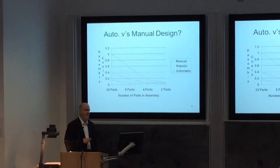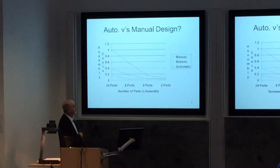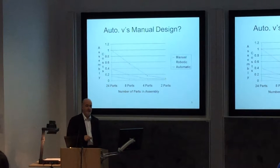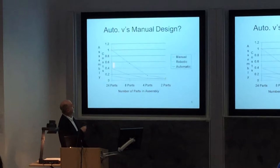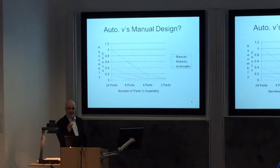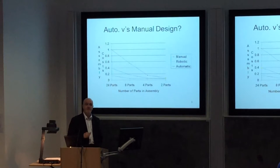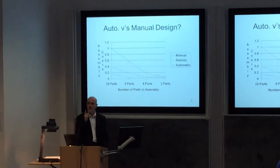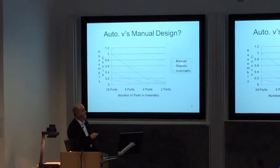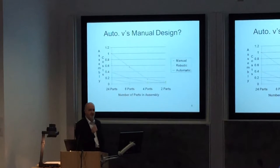Here's a graph to drive some of this thinking. On the x-axis we have number of parts in the assembly, reducing from 24 to 22, and on the y-axis we have assembly cost on a scale of 0 to 1. If you've got a large number of parts, the manual assembly cost is quite high, the robotic cost is in the middle, and the automated — specifically designed for that purpose — is quite low. But as we reduce the number of parts, the costs start to converge. If this converged to just one part needed in an assembly, the cost would be the same between manual, robotic, and automatic.